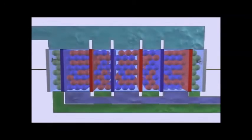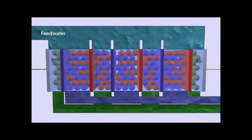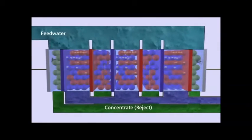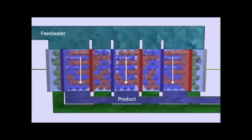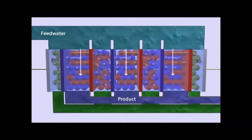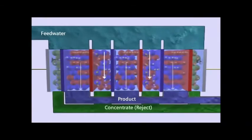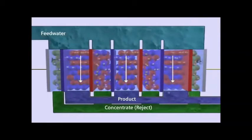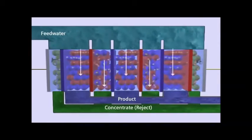As feed water is pumped into the system, it is diverted into separate compartments, mainly the concentrating compartment and the purification or dilute compartment. These water streams remain separated throughout the process because only ions can pass through the membranes.